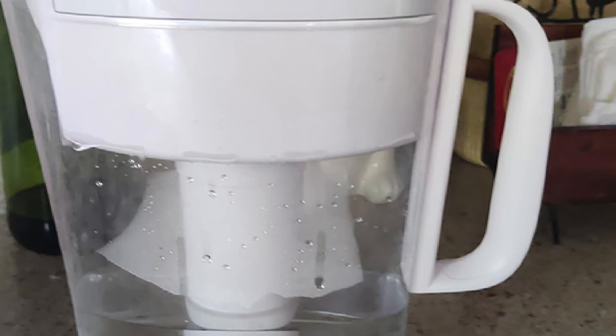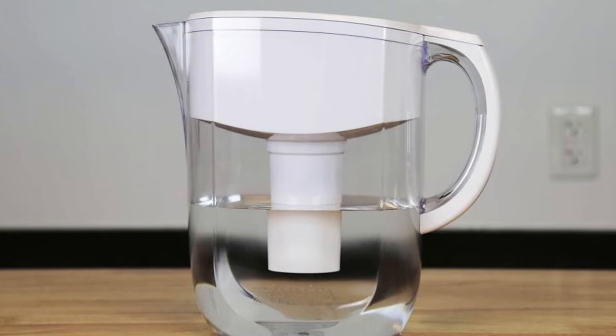However, there is a cost difference between the more advanced pitchers, the Brita Grand and the Pur Ultimate. The Brita Grand pitcher has a retail price of anywhere from $25 to $40 and includes a Brita standard filter. The Pur Ultimate pitcher retails for $25 to $30 and includes a lead reduction filter, which is the more expensive of the two Pur filters we tested.